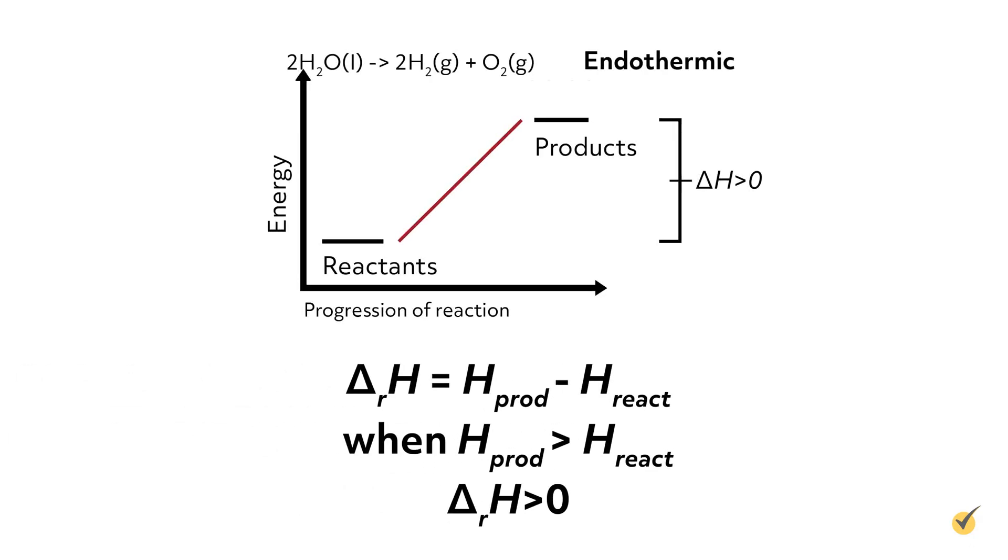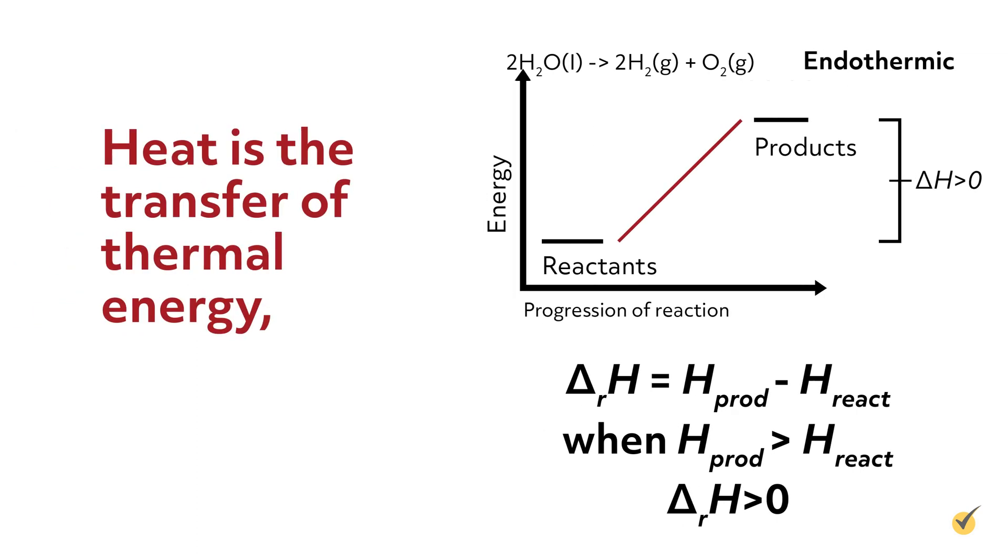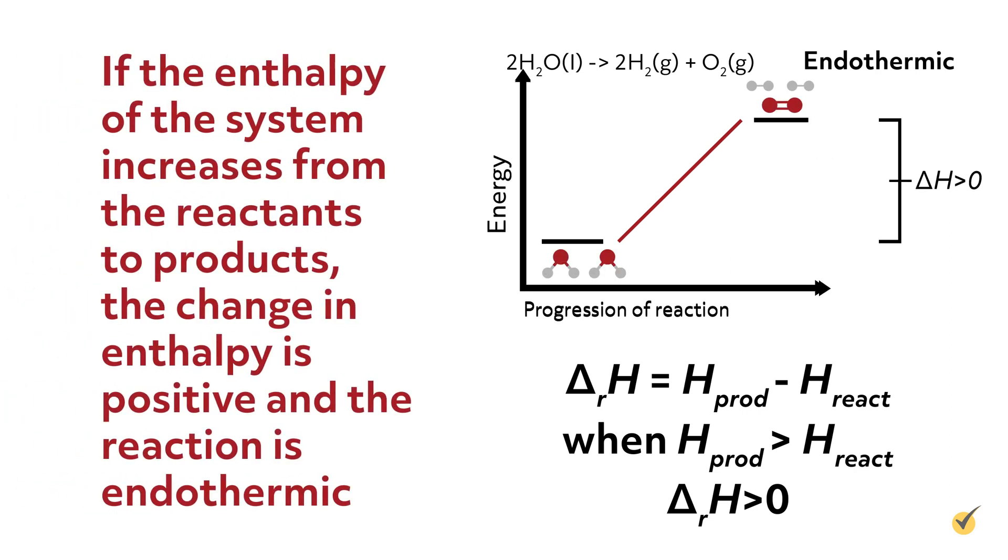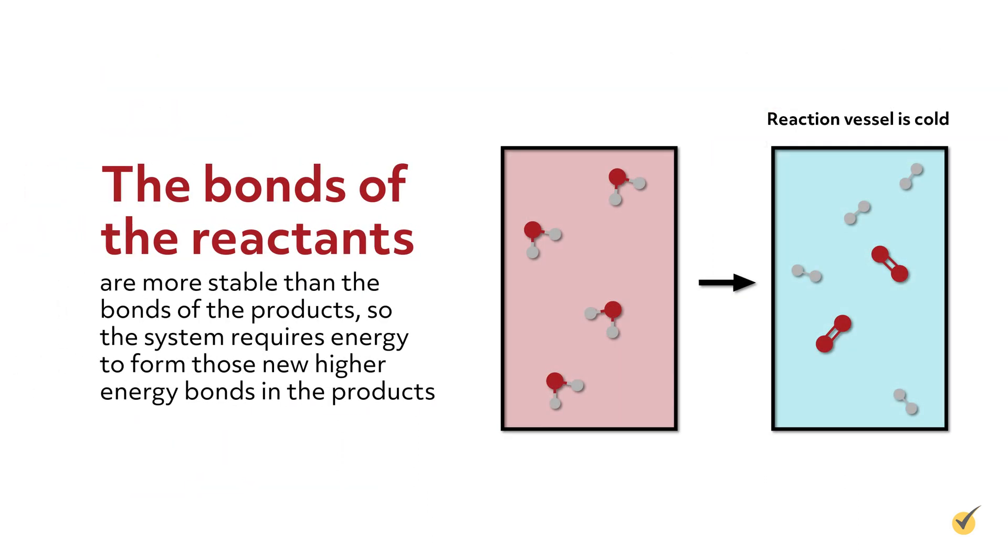So for a chemical reaction, instead of a mountain, we'll define our stationary points as their reactants and products. The x-axis here is the reaction coordinate, which is essentially the progress of their reaction. And the y-axis is energy. Remember heat is the transfer of thermal energy, so it should make some sense that enthalpy is measured in units of energy. If the enthalpy of the system increases from the reactants to products, the change in enthalpy is positive and the reaction is endothermic. The bonds of the reactants are more stable than the bonds of the products, so the system requires energy to form those new higher energy bonds in the products. In this case, the reaction vessel would feel cold to the touch.